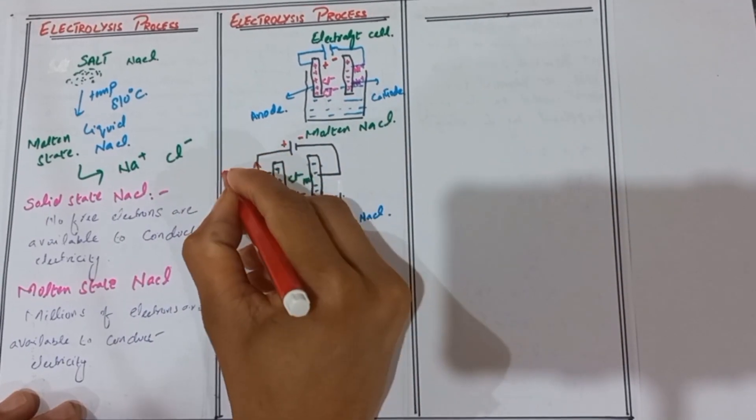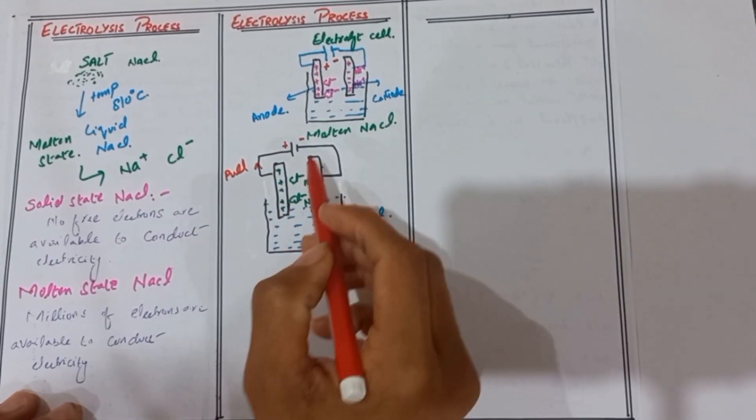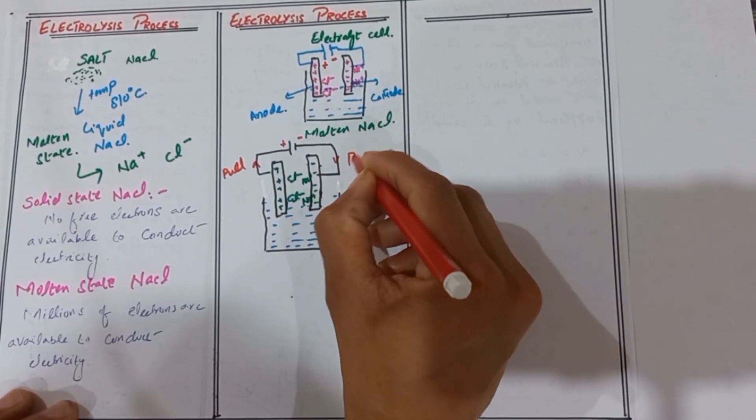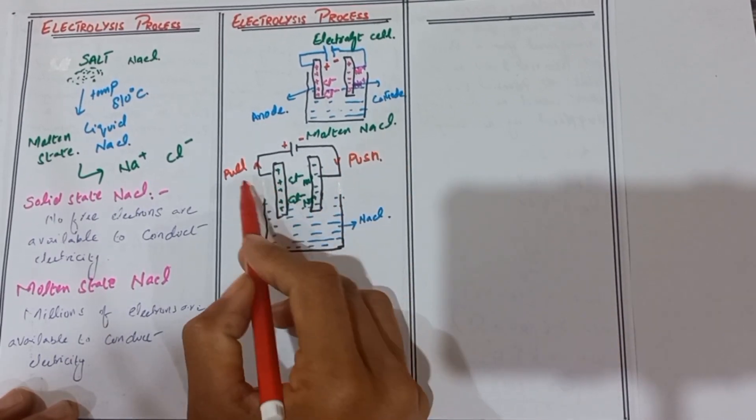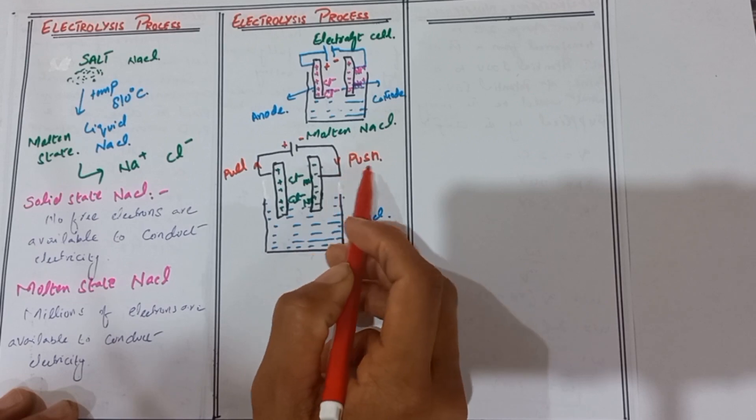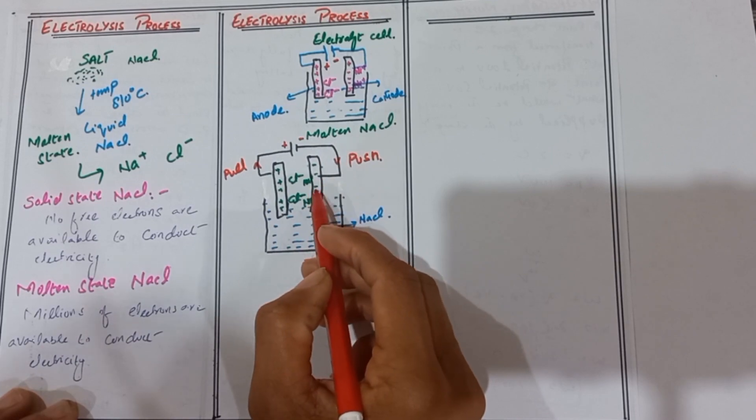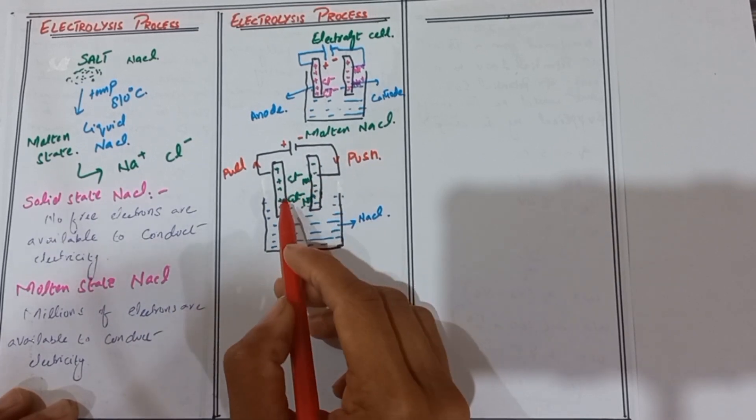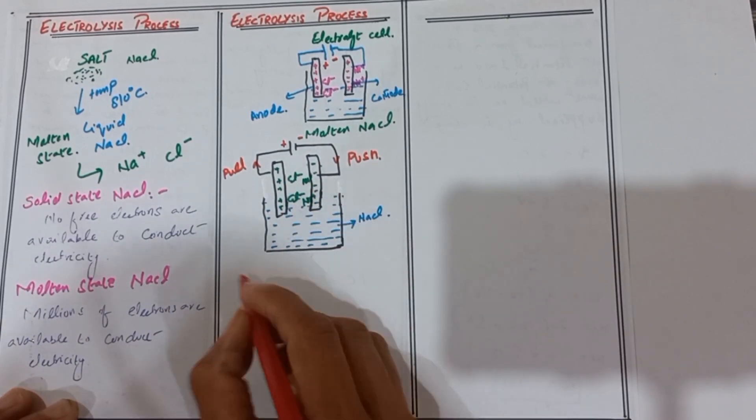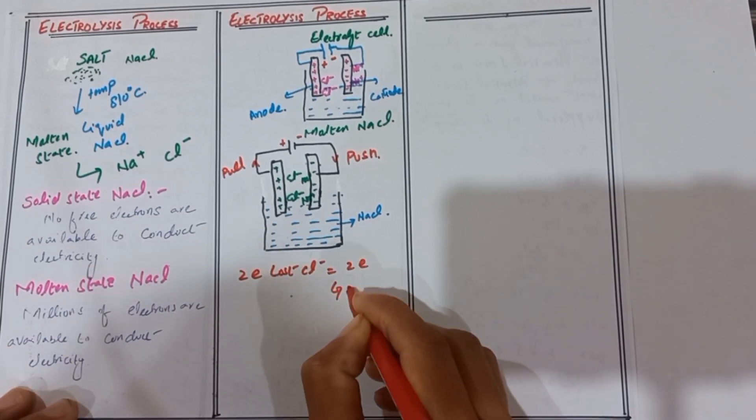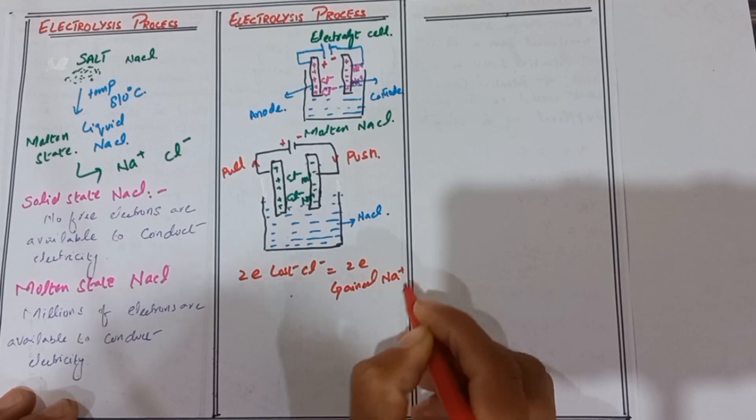The battery pulls electrons from the chlorine ions and then pushes these electrons to the sodium ions. Chlorine loses 2 electrons and these lost electrons are gained by sodium ions. Therefore, 2 electrons lost by chlorine ions equals 2 electrons gained by sodium ions.